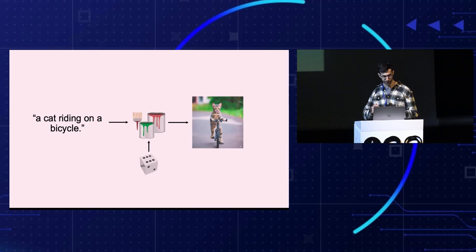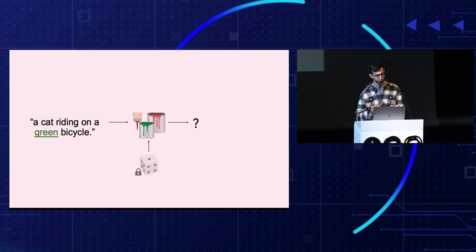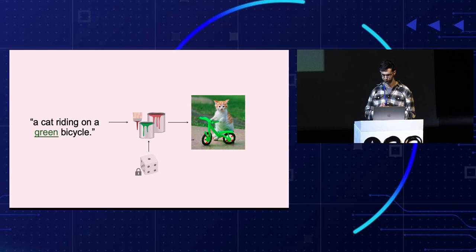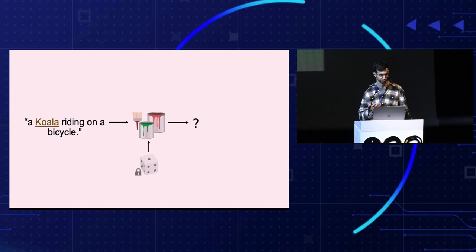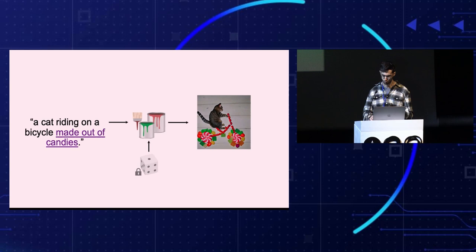Let's say you want to generate a cat on a bicycle. You try several times and are generally pleased with this particular result. But what if you actually prefer a green bicycle? The most intuitive and natural way is just adding the word green to the prompt and regenerating the entire image. However, even with the same random seed, you get a completely different cat. And if we want to replace the cat with a koala, now the color of the bicycle is changed. The same things happen for replacing the grass with a street or asking for a bicycle made out of candies.